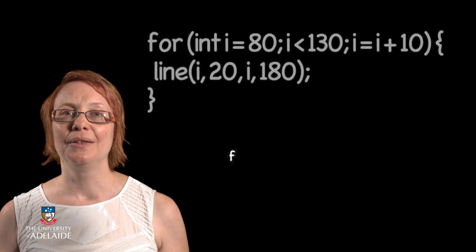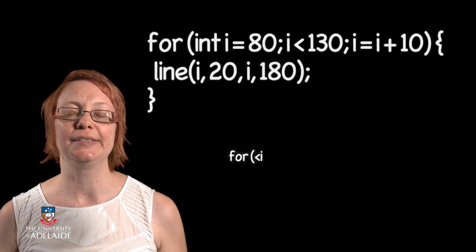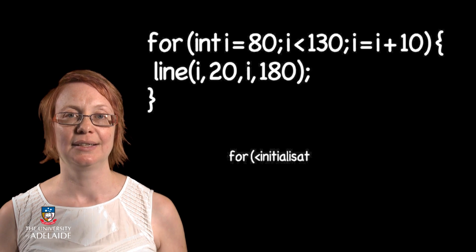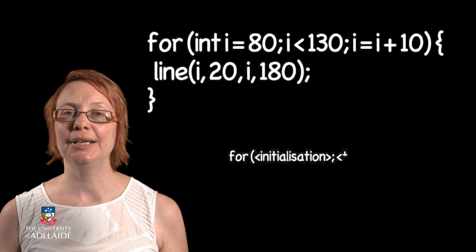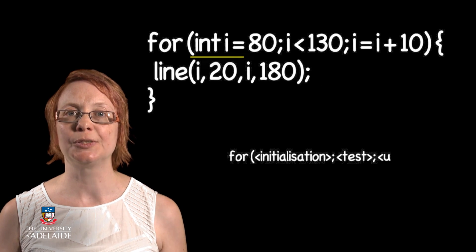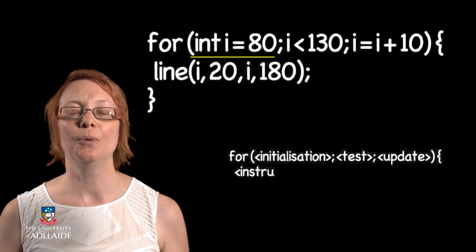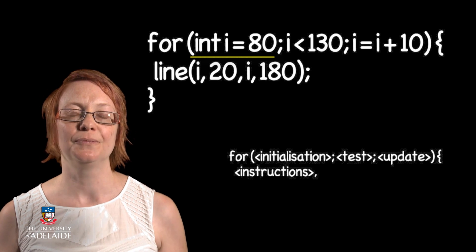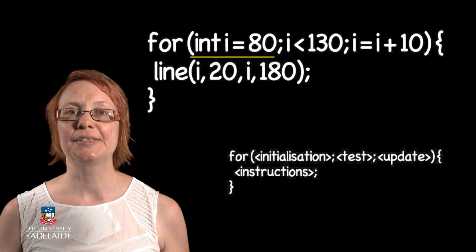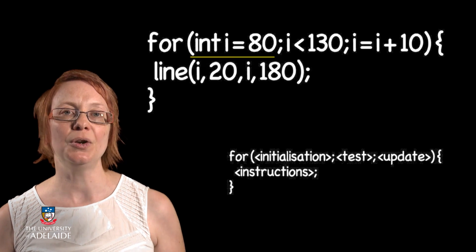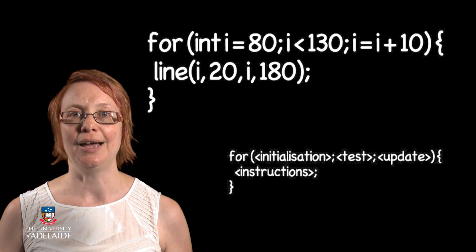Recall that a for loop consists of the following template. The initialization section is where we can declare a variable that holds an initial value — in this case, the x coordinate for the first line.